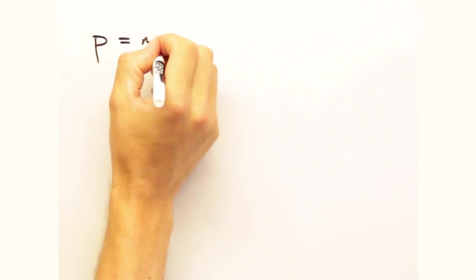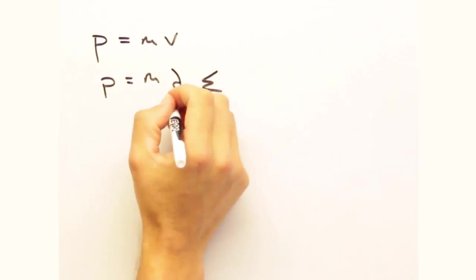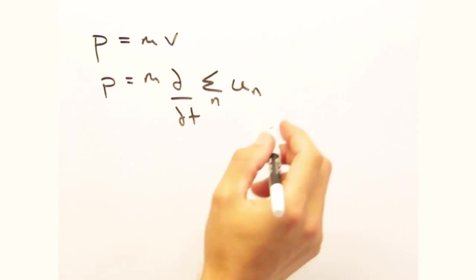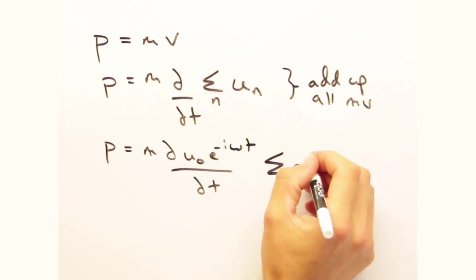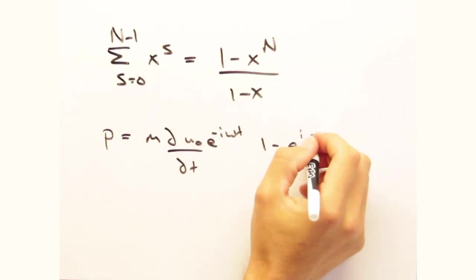While that makes sense, I'd like to see some math to back that up. Sure. Let's start with p equals mv, where we add up all the displacements over n before taking the time derivative. This time we'll use the complex exponential form of u sub n. While this looks a little ugly, we can simplify it using this infinite series approximation.